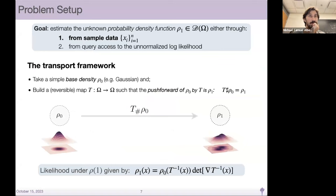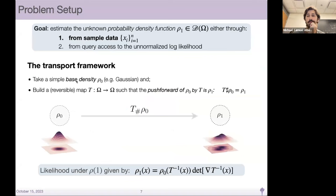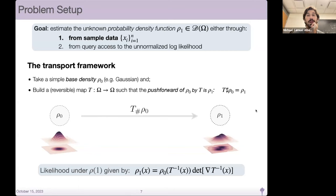With this transport framework, we have some base density rho zero, and our goal is to build a parametric reversible map T such that when we apply the push forward of T onto the base density rho zero, we get the target density rho one. Under the right invertibility conditions, we can compute the likelihood of rho one using this push forward and the change of variables given by the determinant of the Jacobian of the map.